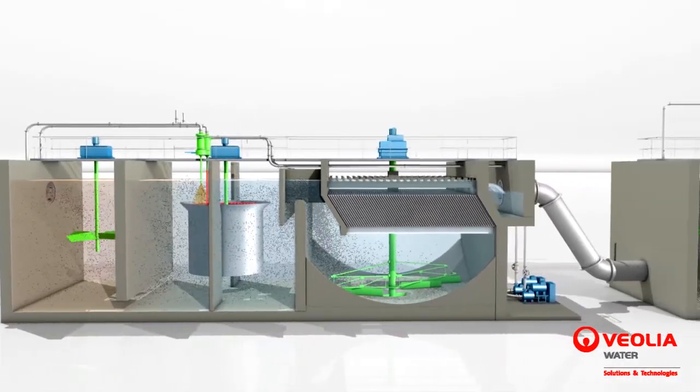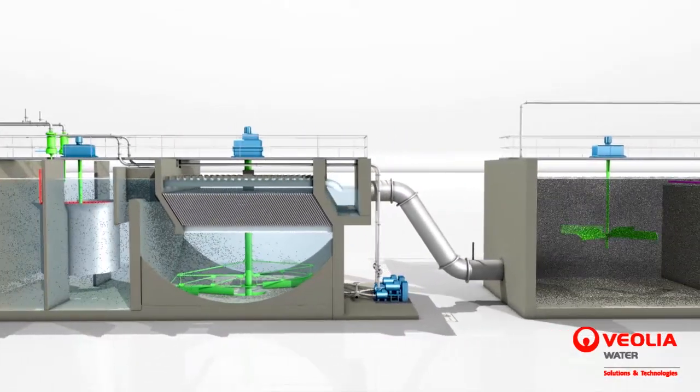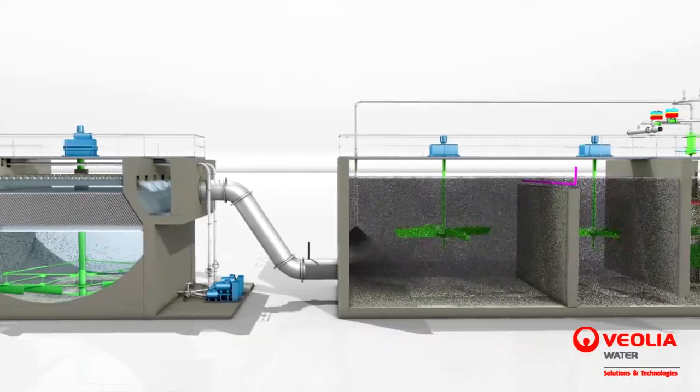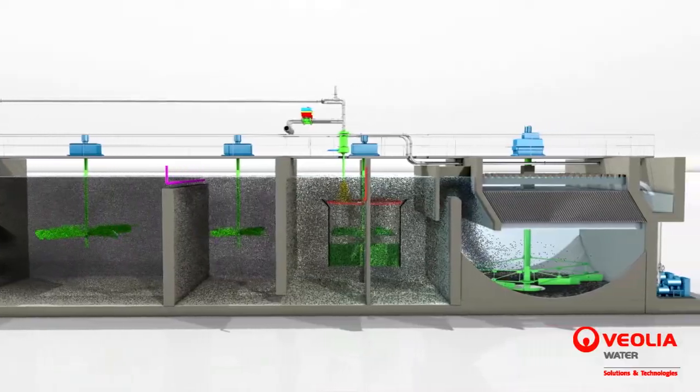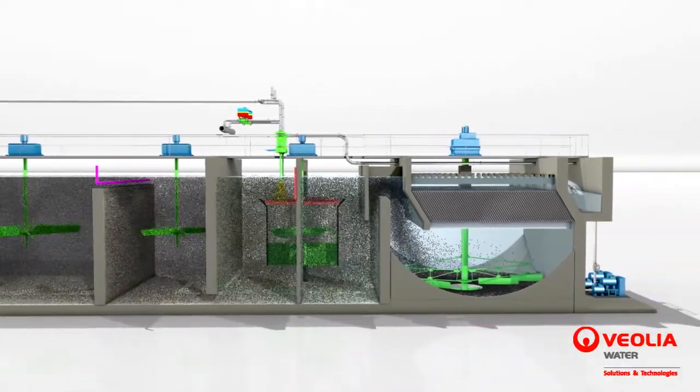The first Actiflo unit consists of typical chemical clarification for the removal of suspended solids and flocculable compounds, followed by an Actiflo carb polishing unit for the physical absorption of non-flocculable compounds.